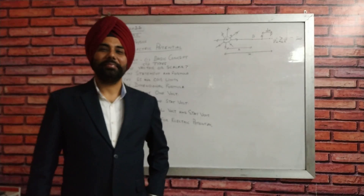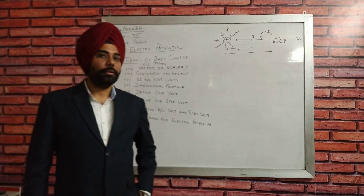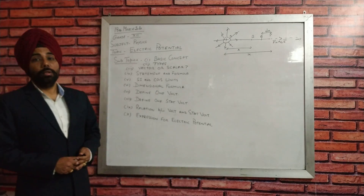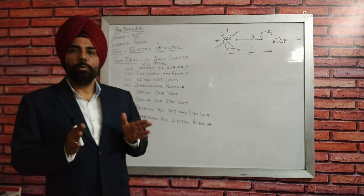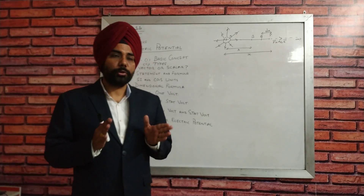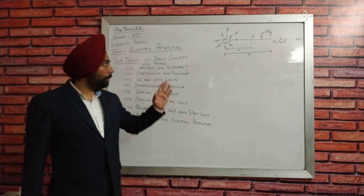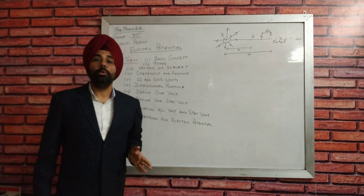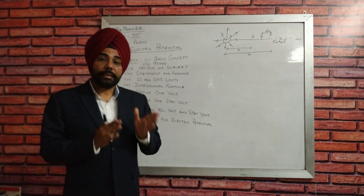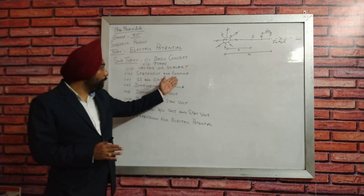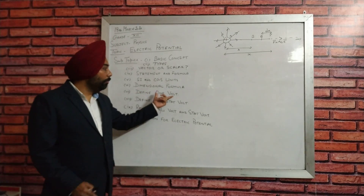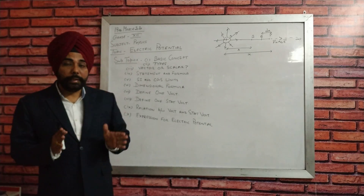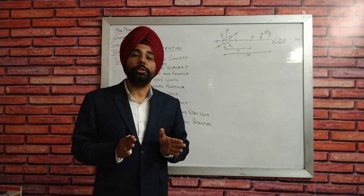Welcome dear students. Today we are going for a physics topic for 10+2 grade and today's topic is electric potential. In this full video, we will go through all the parameters of electric potential: the basic concept, the types, whether it is a vector or scalar, its statement and formula, the SI and CGS units, one volt and one statvolt definitions, the relation between volt and statvolt, and the expression for electric potential, which is very important.